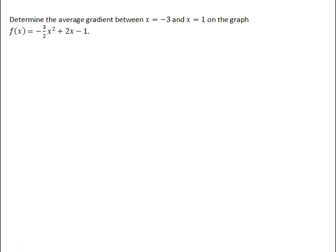Determine the average gradient between x = -3 and x = 1 on the graph f(x) = -3x² + 2x - 1.